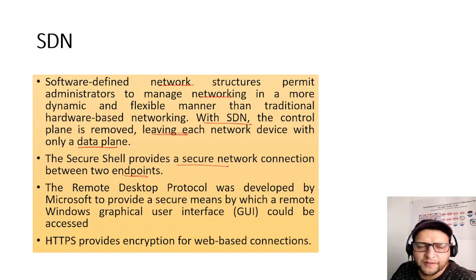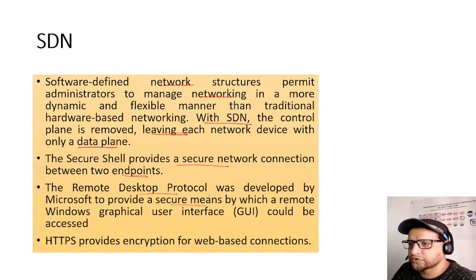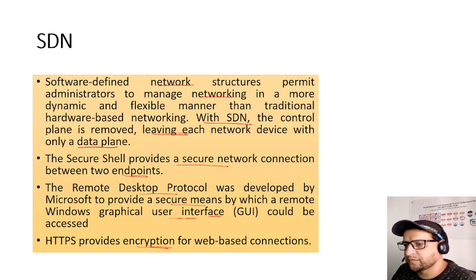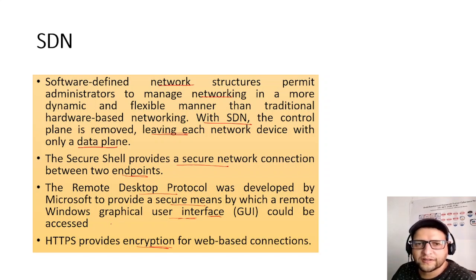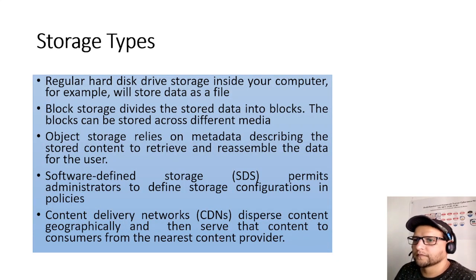Secure Shell provides a secure encrypted connection between two endpoints, preventing man-in-the-middle attacks — unlike Telnet or FTP. RDP was designed by Microsoft to provide secure remote access to a Windows GUI, letting you control a server remotely without being physically present. HTTPS provides encryption for web-based connections. Unlike HTTP, it creates a tunnel using digital certificates and public key encryption.